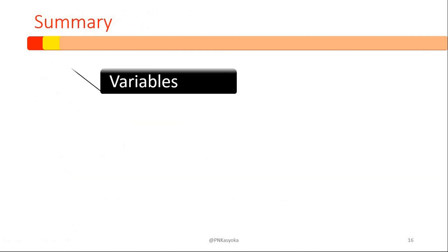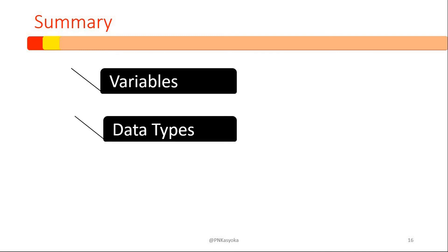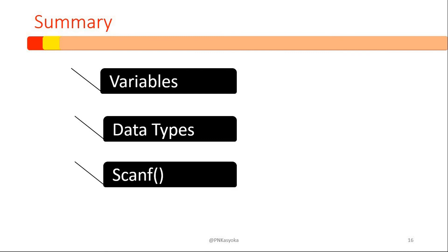In summary, we have looked at variables and been able to distinguish between variables and variable identifiers. We've seen how to declare and assign values to variables. We've looked at different basic data types used in C such as integer, character, float, and double. And lastly, we looked at the scanf function, its syntax, and different placeholders. That wraps up lesson two. Let's meet next time. Bye-bye.